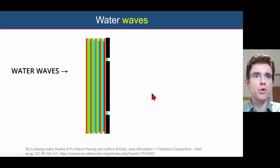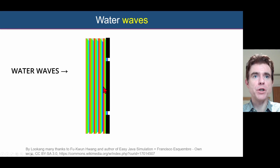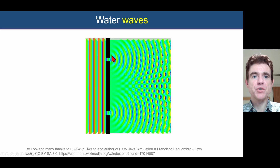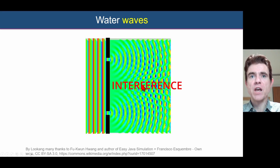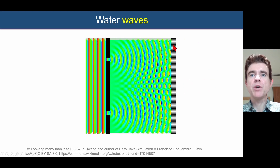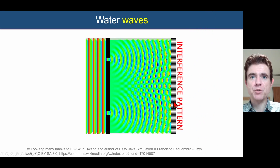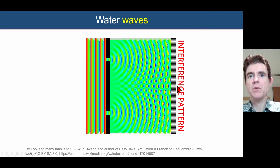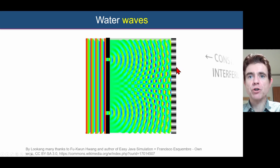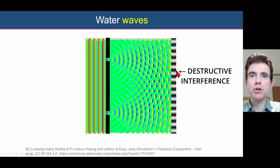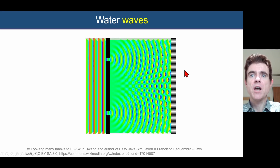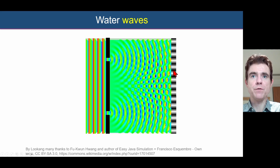We'll start by looking at water waves incident on a barrier with two gaps. What happens is that we get diffraction of the water waves from each of those two gaps, and these two diffraction patterns end up interfering with each other. We end up with a very characteristic interference pattern, with regions of constructive interference where peaks coincide, and regions of destructive interference where a peak and trough coincide, resulting in no net wave.